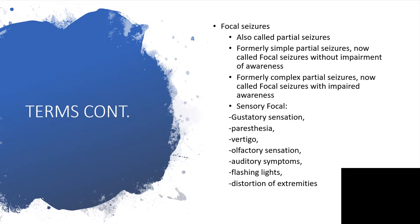Sensory focal could present in form of gustatory sensation, whereby the individual is having a kind of strange taste, or paresthesia, tingling, or aura of vertigo that the ground is spinning around him or her. Olfactory sensation, like sensing a kind of odor that no one else around could sense. Auditory symptoms, hearing sounds or distortions. Now seeing flashing lights or extremities are distorted.